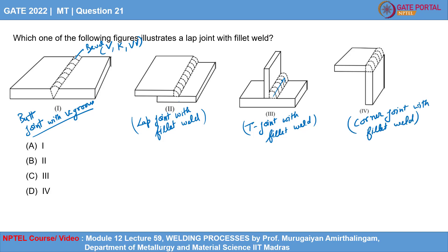Going back to the question, option 2 represents the lap joint with a fillet weld. To know more about standard welding configurations, kindly refer to Module 12, Lecture 59 on welding processes by Professor Morgan Amrithalingam, Department of Metallurgy and Material Science, IIT Madras.